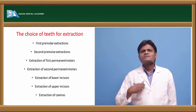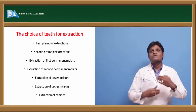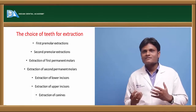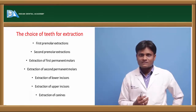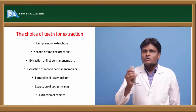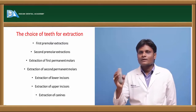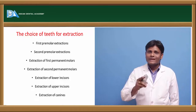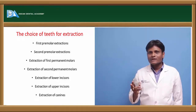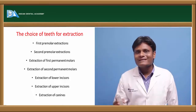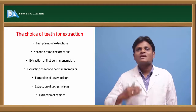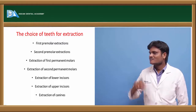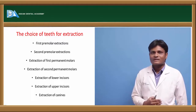Now, which teeth to extract? That is the choice of teeth to extract. We have teeth like incisors, canines, premolars, and molars in the dental arches. In each group we have two centrals, two laterals, two canines, four premolars, and six molars. Among all these teeth, which teeth to extract for therapeutic purpose? Let us discuss those things in detail.